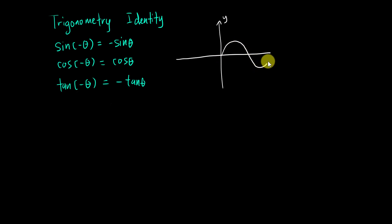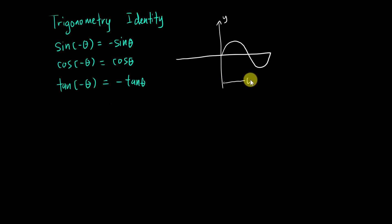You can see the sine graph looks like this. Over here, this is the positive theta — from here to here the angle is positive, because zero is over here, and it goes up to 360 degrees.